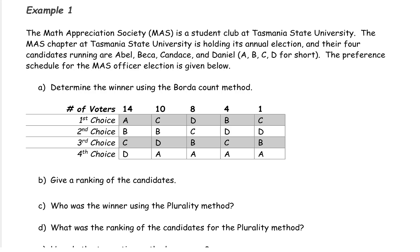The Math Appreciation Society, or the MAS, is a student club at Tasmania State University. The MAS chapter is holding its annual election, and their four candidates running are Abel, Becca, Candace, and Daniel — we'll call them A, B, C, and D for short. The preference schedule for the MAS officer election is given below.